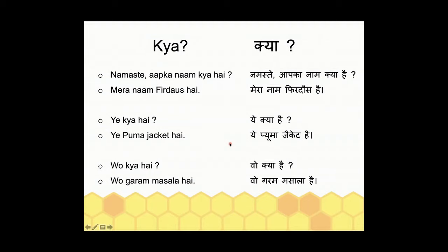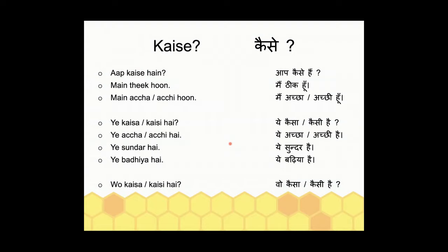Now the second question word: 'kaisa/kaisi.' When you converse with somebody and want to know how they are, you ask 'aap kaise hain?' — meaning 'how are you?' The answer to that can use the adjectives we've already learned.